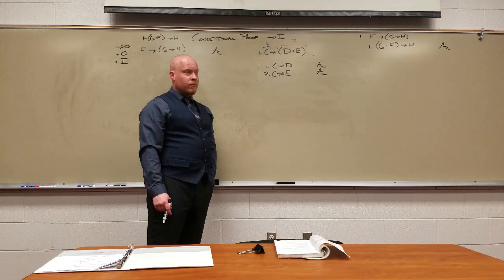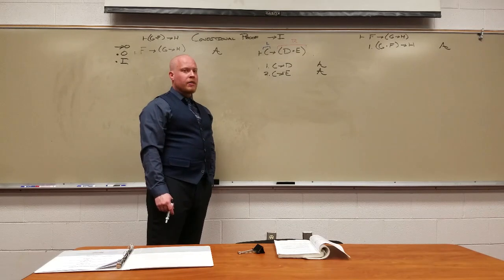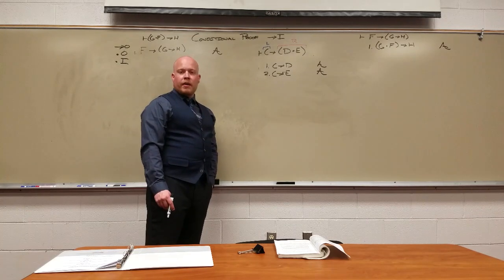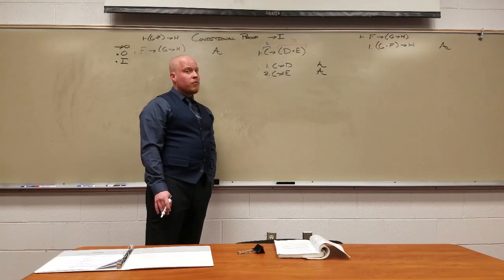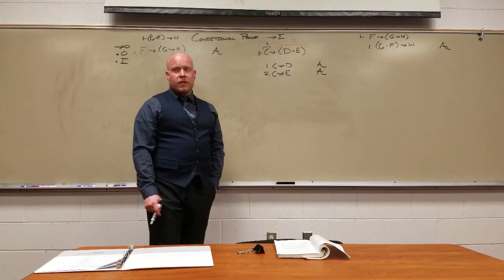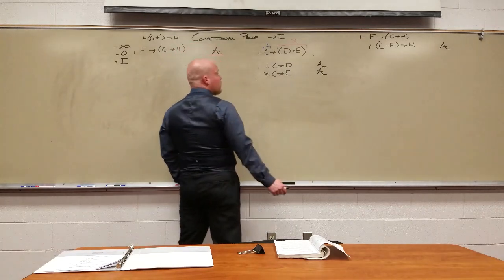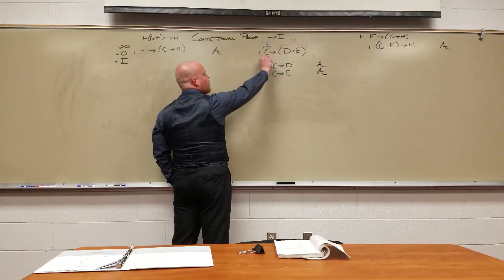So can we do arrow out? We have two arrows, but we don't have to match the left side by itself. Can we do and out? No dots. Can we do and in? We can. Should we? Doesn't get us anywhere. So in this case, our goal, we need to ask the next question: is our goal an arrow? It is. There's the left, there's the right.